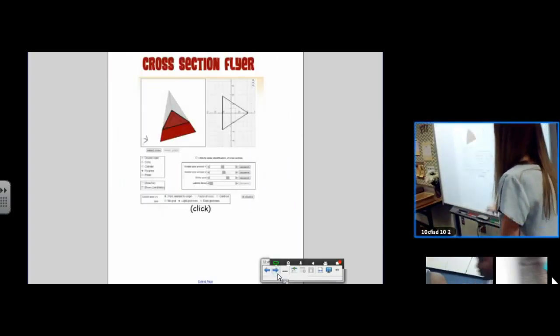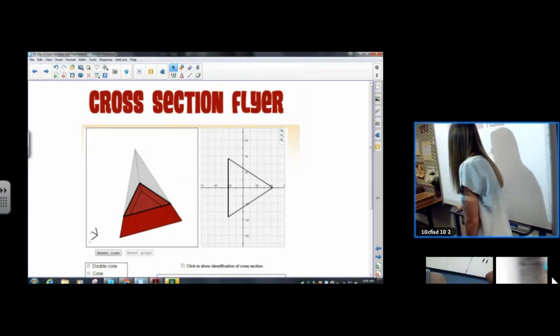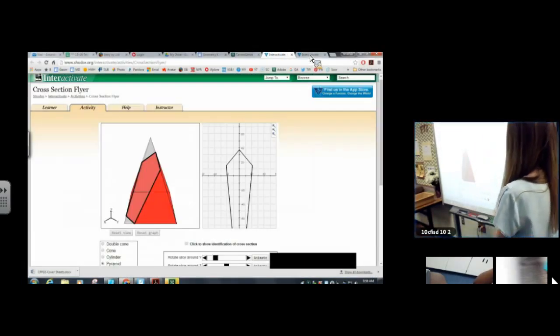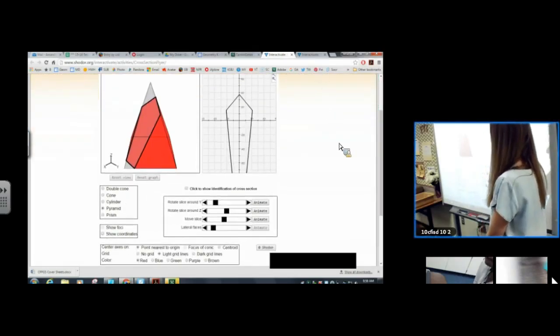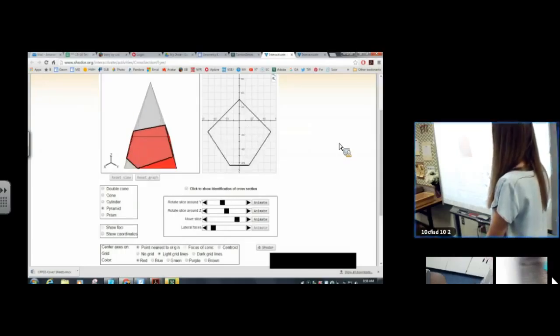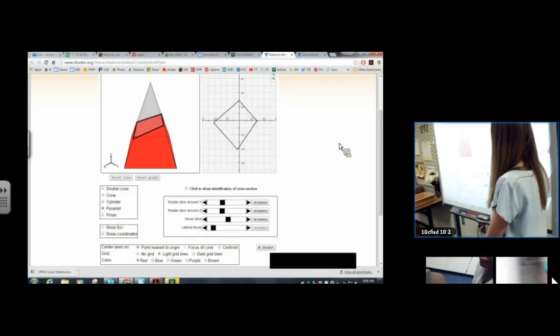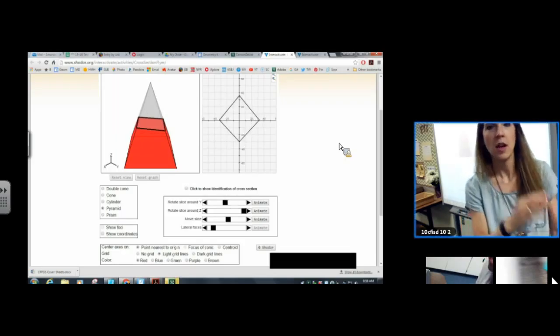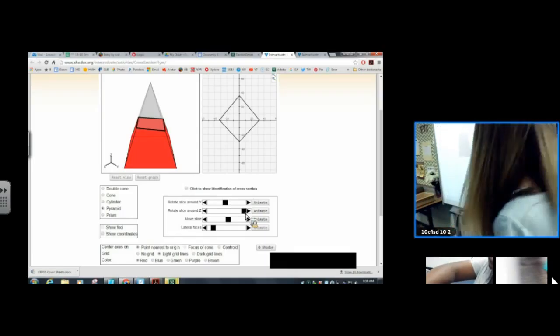This is what you will be looking at if you do that exploration that I send you. It's called cross section flyer. But anyways, it's pretty cool. You take a shape, and you can move the cross section all around. You can drag it, and you see what different cross sections you get when you move it around. Isn't that cool? So that's the website I really want you to play with tonight, and I'm going to send you an interactive guide-by-guide step as to how you should play with the website.